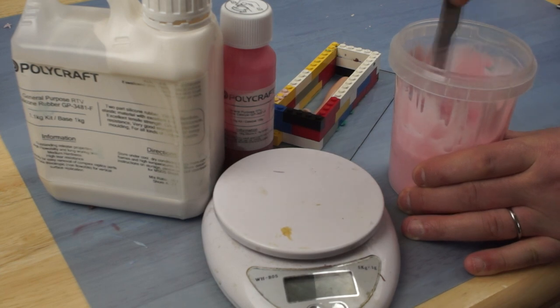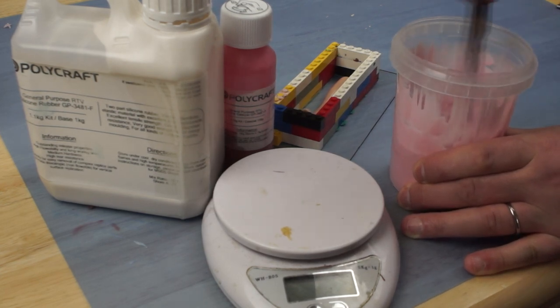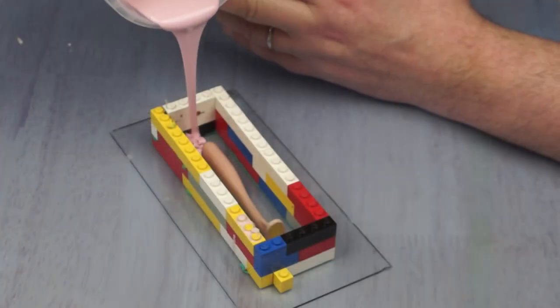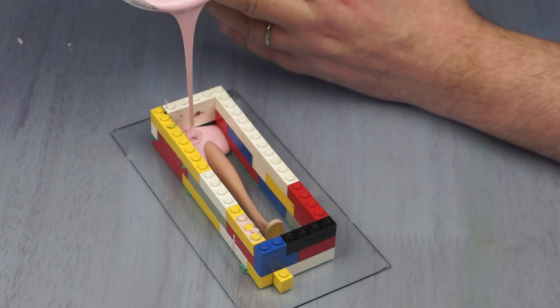For the mould, I weighed out and mixed up a batch of two-part RTV silicon. Then poured it out in a steady stream until the box was full.